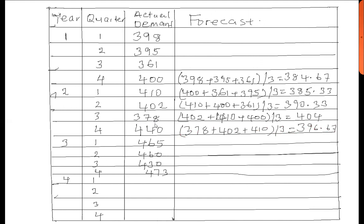For the next forecast, that is quarter 1 of year 3, we get the last 3 entries: 440, 378, and 402. So we add 440 plus 378 plus 402, divided by 3, which gives us 406.67.